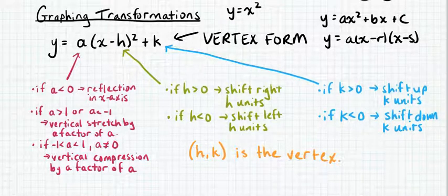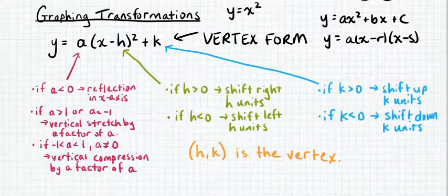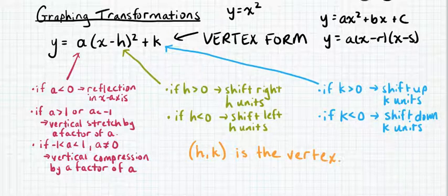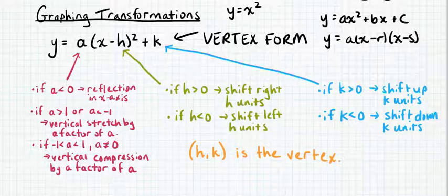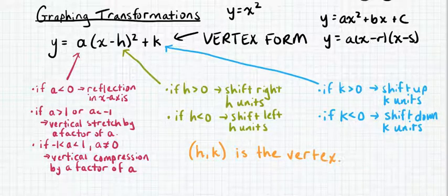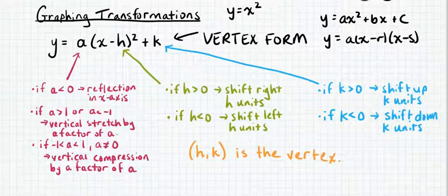Starting from y equals x squared, the a, the h, and the k in vertex form change what the graph looks like. The a value: if a is less than 0, then a reflection in the x-axis occurs. If a is greater than 1, or if a is less than negative 1, there's a vertical stretch by a factor of a. And if a is between negative 1 and positive 1 — except for 0, because if a is 0 this would not be a quadratic relation — then there is a vertical compression by a factor of a.